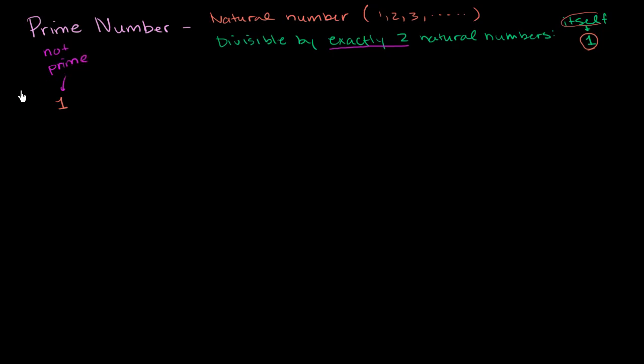Let's move on to 2. So 2 is divisible by 1 and by 2, and not by any other natural numbers. So it seems to meet our constraint. It's divisible by exactly two natural numbers itself. That's 2 right there, and 1. So 2 is prime.